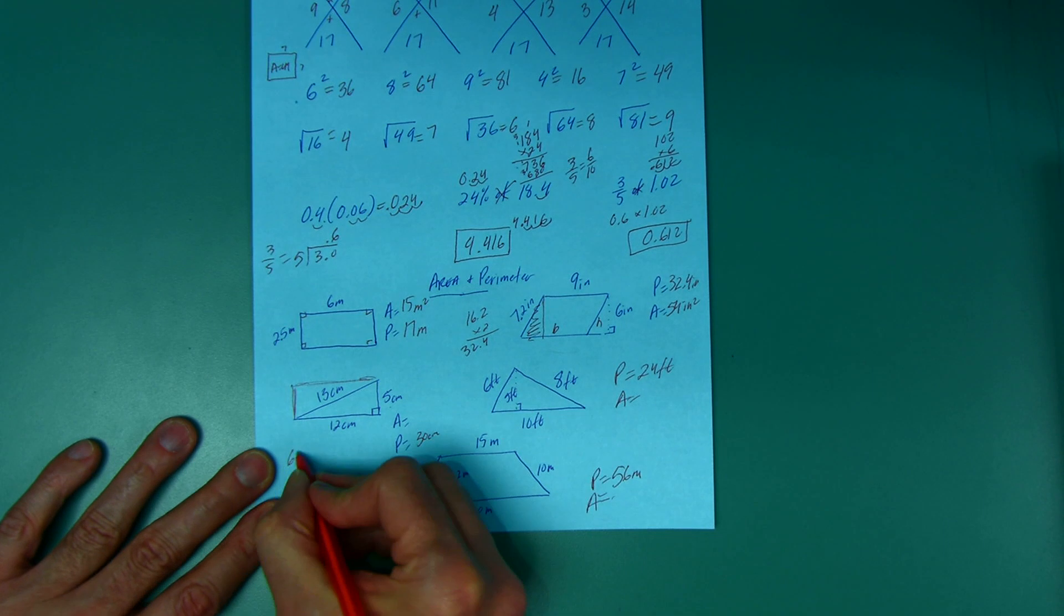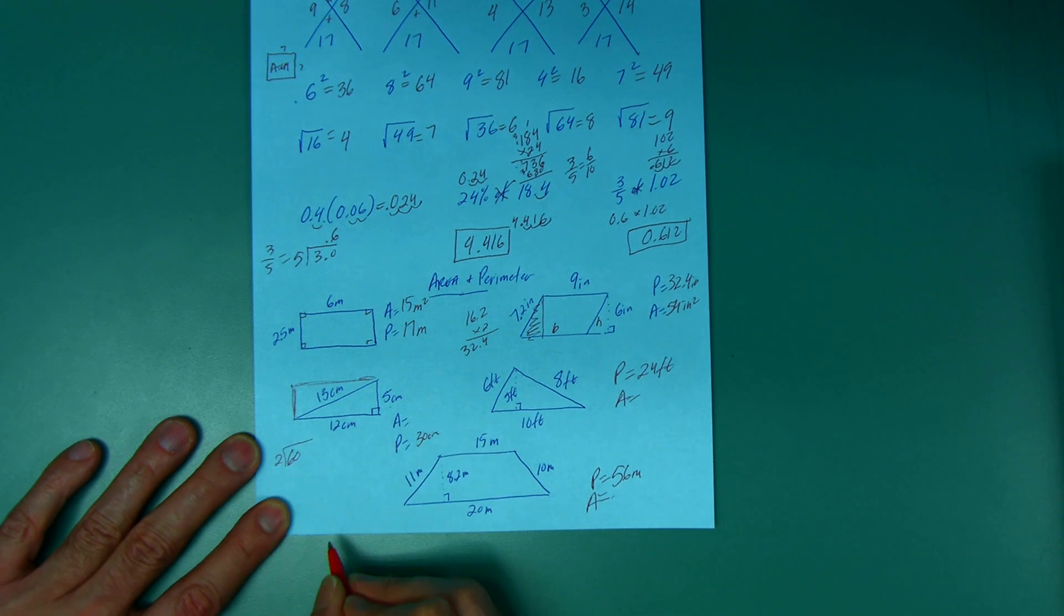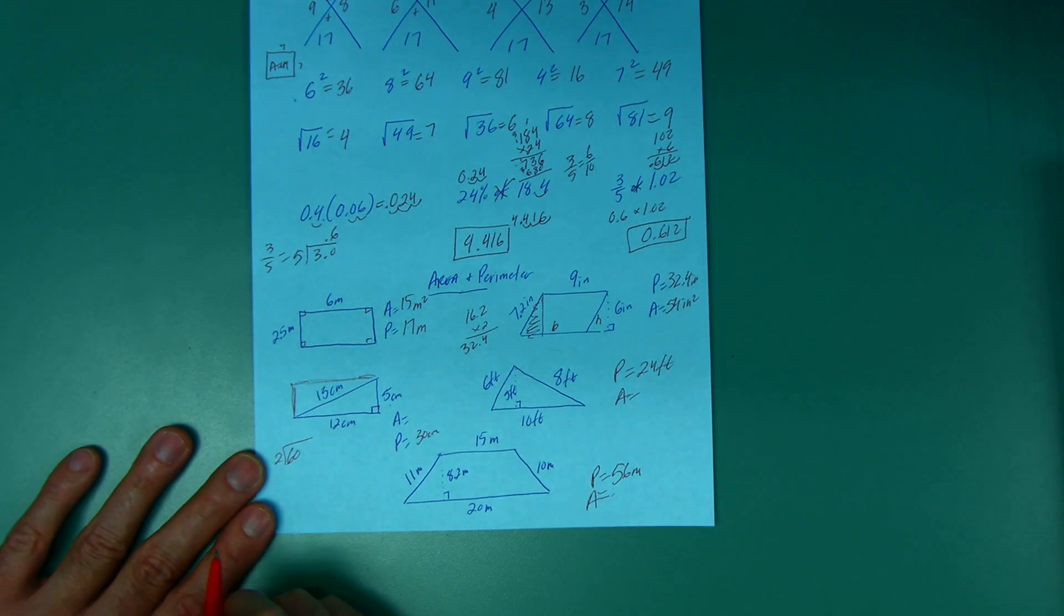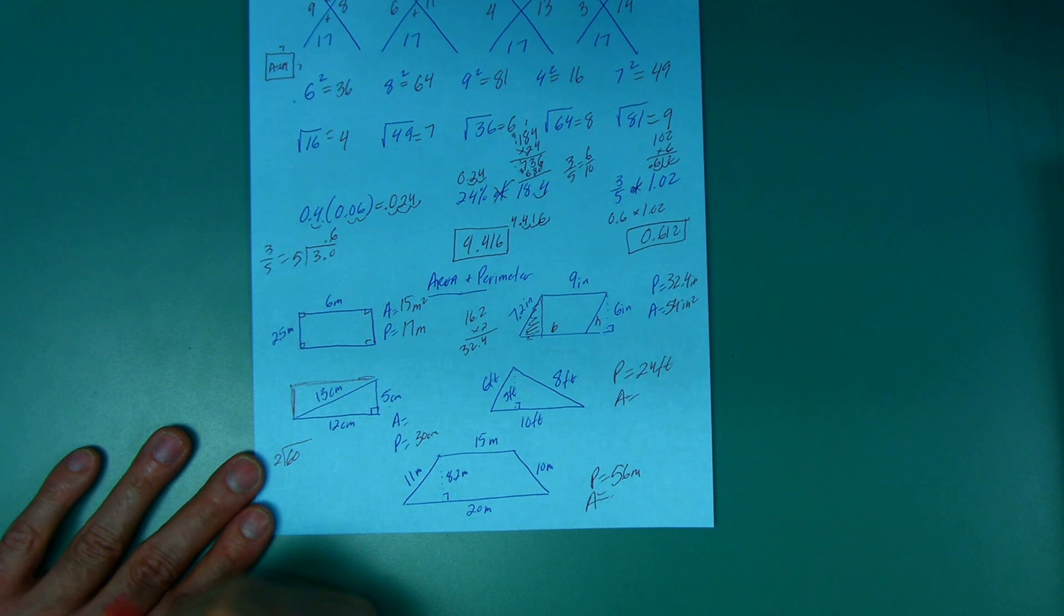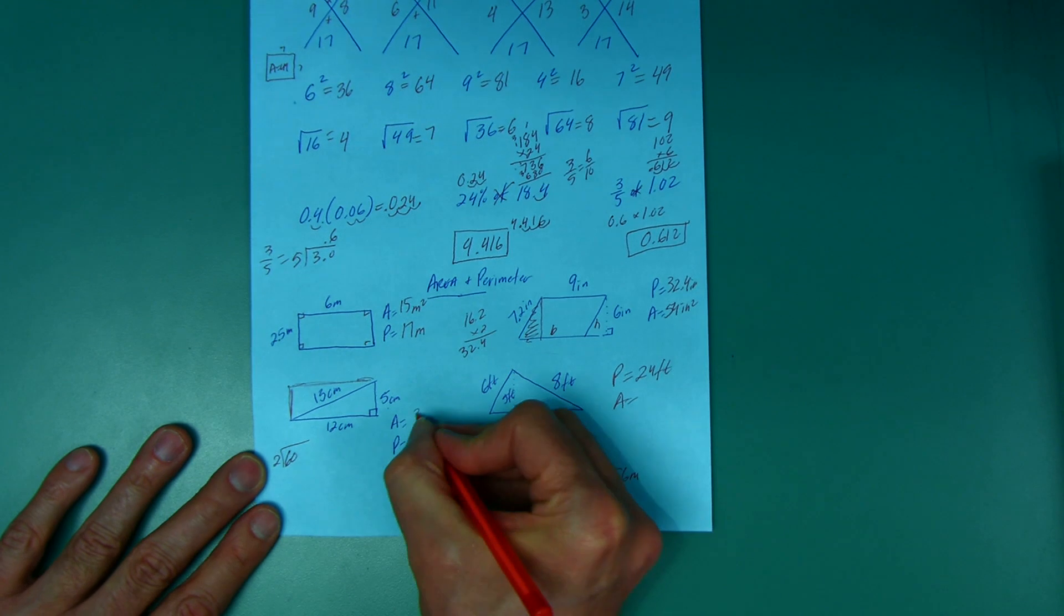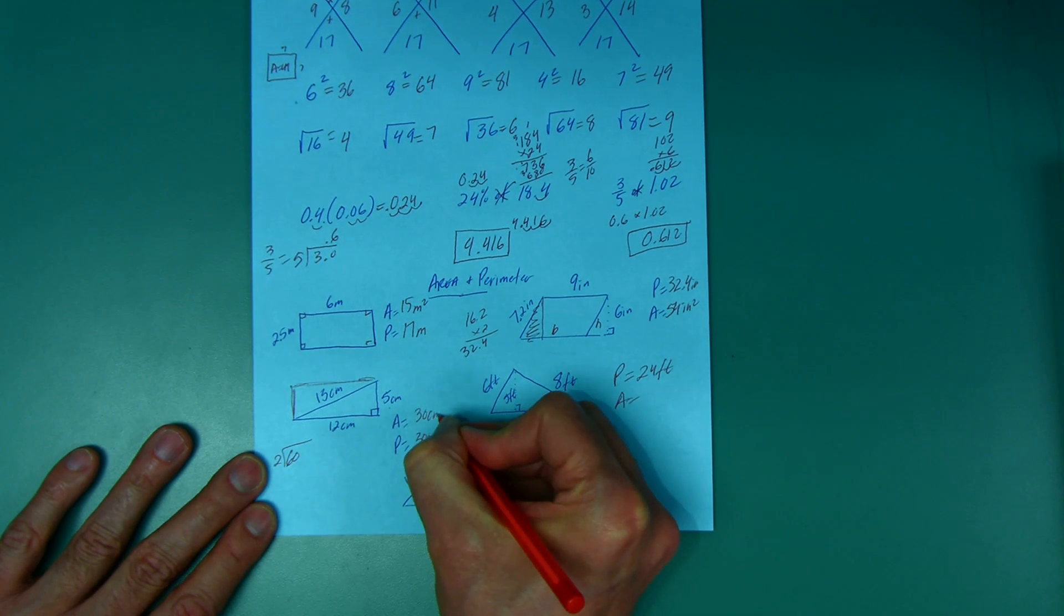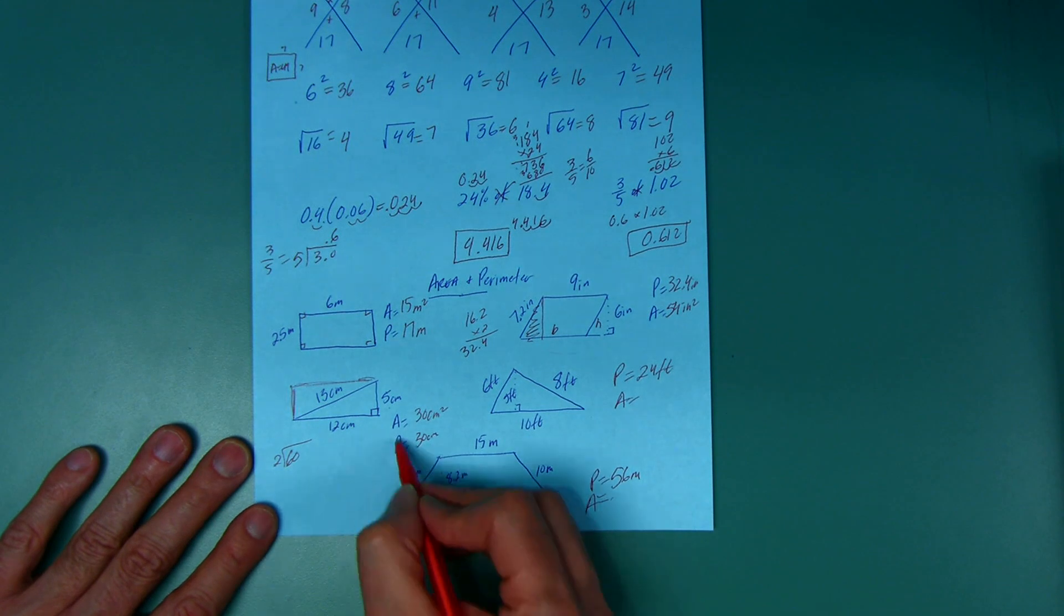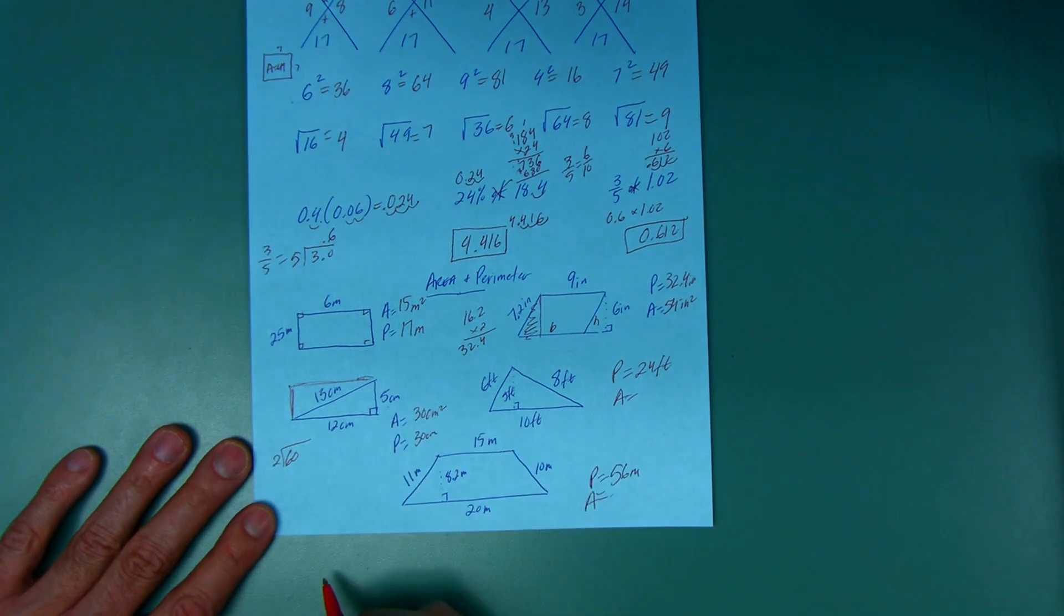So I could do 60 and divide it by 2, but the shortcut: if one of these numbers, the base or the height, is even, take half of that and multiply it by the other. So half of 12 is 6, 6 times 5, 30. Isn't that cool? The perimeter is 30 centimeters, the area is 30 square centimeters. And again, 60 divided by 2 is going to be 30 as well.